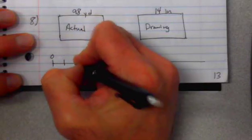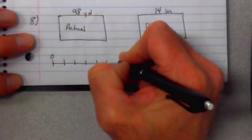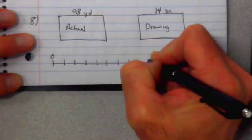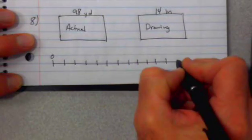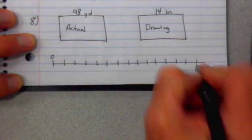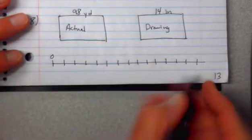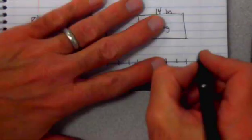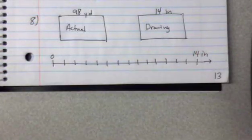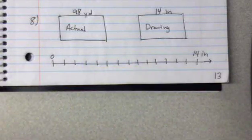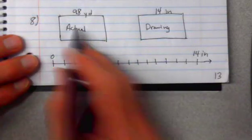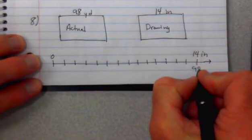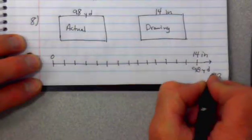So 1, 2, 3, 4, 5, 6, 7, 8, 9, 10, 11, 12, 13, 14. I'm gonna set it up as a double number line. On the top I'm gonna have 14 inches, that's my drawing, but on the bottom of this is my actual which is 98 yards.